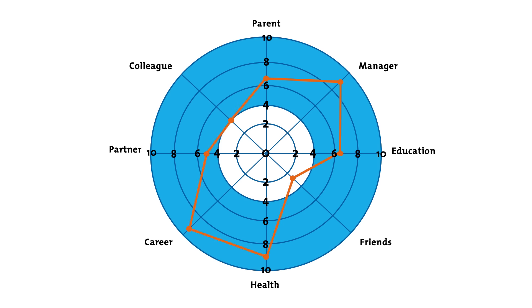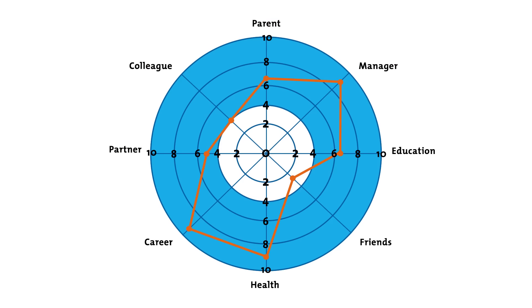What does it look like? Are any parts clearly out of balance? Remember, different dimensions will need more or less attention at different times in your life, so there's no one right answer. The goal is not to make a perfect circle, but to think about how much attention you'd like to give to each part of your life. Plot your ideal scores on the diagram too, and visualize how things could be for you.